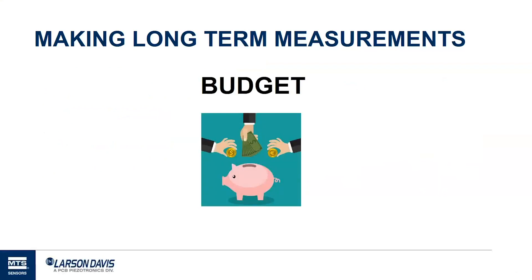And lastly, budget. I put this last instead of first, because oftentimes the budget can be adjusted to meet the requirements, and so you know where you might need to lose features or what features you cannot lose. So you have your requirements, your needs, your wish list, and then finally you weigh this with the budget. Know what you need and know what you want, and then you start to build the appropriate system from there.